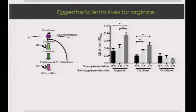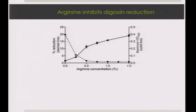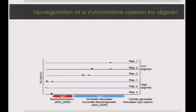One interesting thing about E. lenta is that, unlike many gut organisms seeking carbohydrates, it thrives on arginine — growing primarily using arginine as a carbon, nitrogen, and energy source. Interestingly, as you add more arginine to the media, you increase overall growth of E. lenta, but at the same time, high levels of arginine inhibit the reduction or inactivation of digoxin.